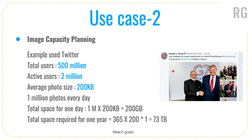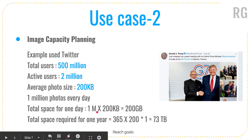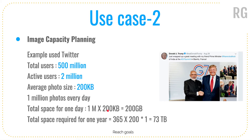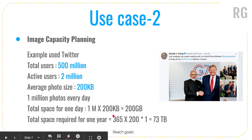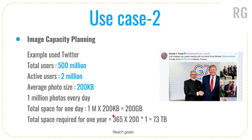Let's say the average photo size is 200 KB and 1 million photos are uploaded every day. We can figure out the space for one day: 1 million × 200 KB = 200 GB. For one year, assuming the same traffic pattern, it is 365 × 200 GB which equals 73 terabytes.